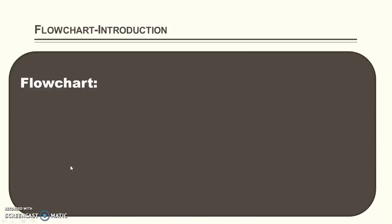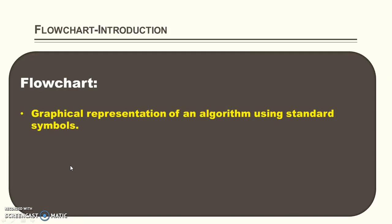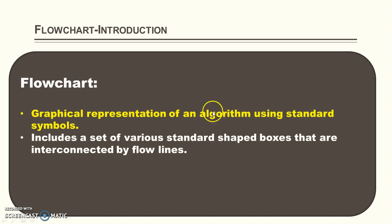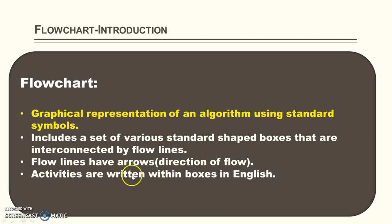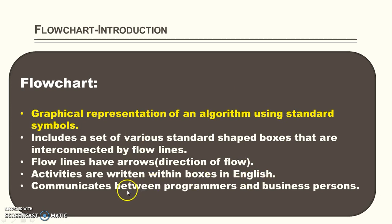Let's first discuss about the flowchart. The flowchart is nothing but the graphical representation of an algorithm using a standard symbol. That includes a set of various standard boxes that are interconnected by a flowline. Flowlines can have arrows that represent the direction of the flow. Activities are written within a box in English language. The flowchart can also be used to communicate between the programmer and the business person.